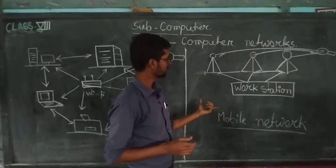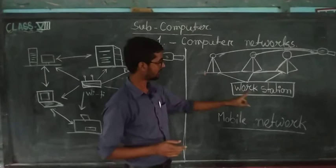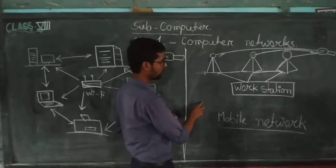Without satellite, all this work station or the network we could not use. So first, what is needed? Satellite. After that, mobile tower, then work station. So that is mobile network system.